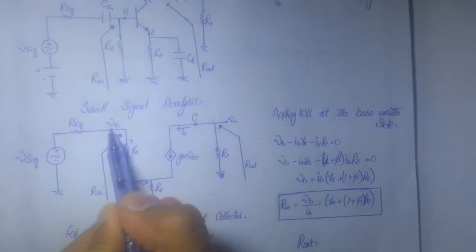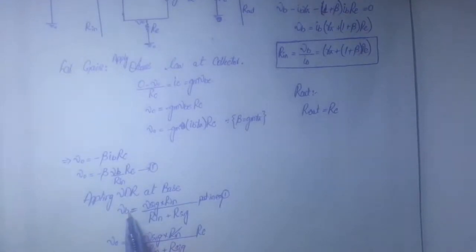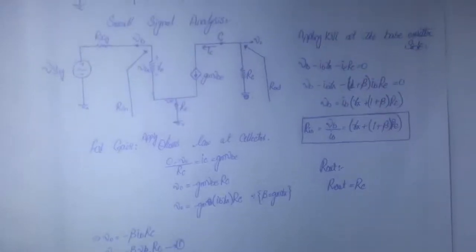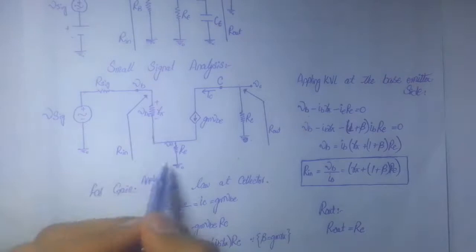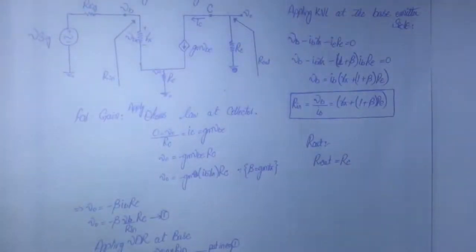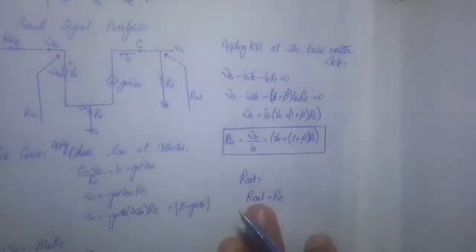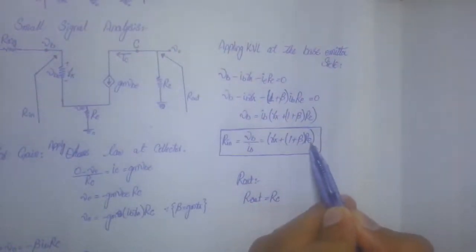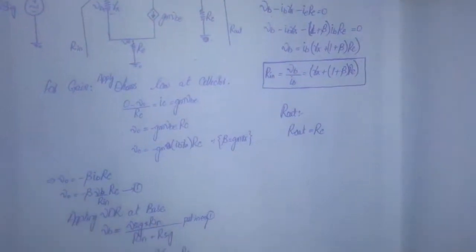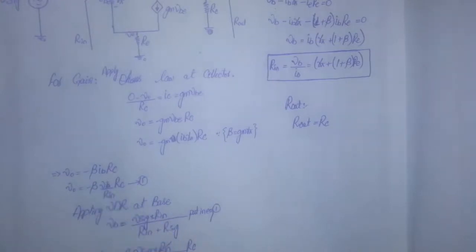To find VB we apply the voltage divider rule. Since RN and R-signal are in series, VB equals V-signal multiplied by RN divided by (RN + R-signal). Here RN equals Rπ plus (1 + β)·RE. Substituting this value into our expression for Vout by V-signal gives us the voltage gain.